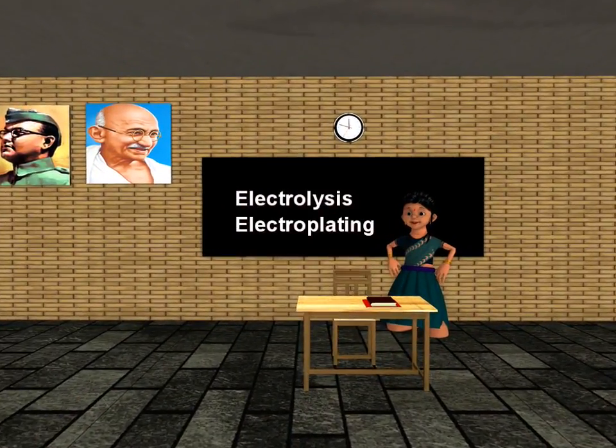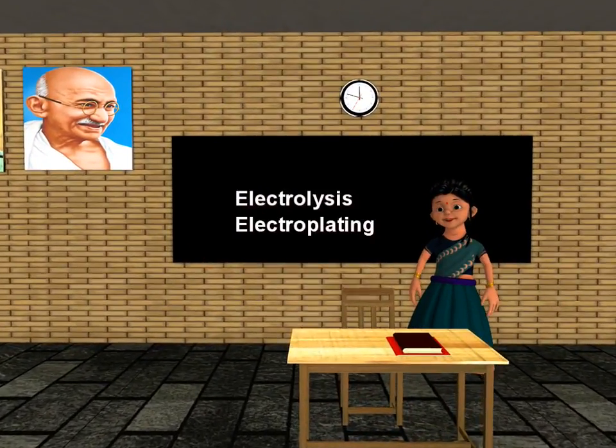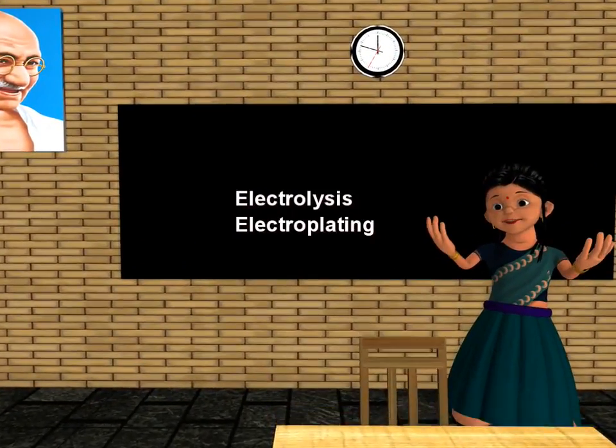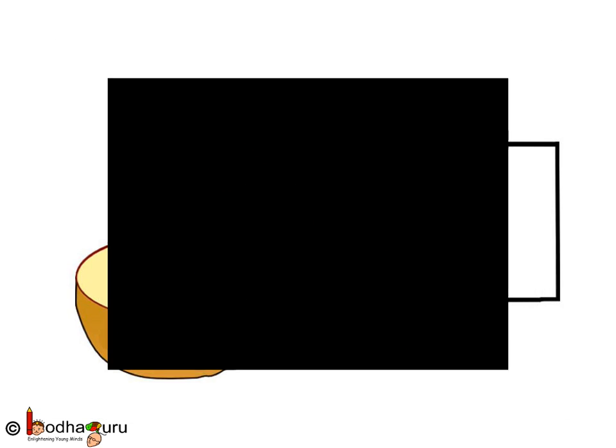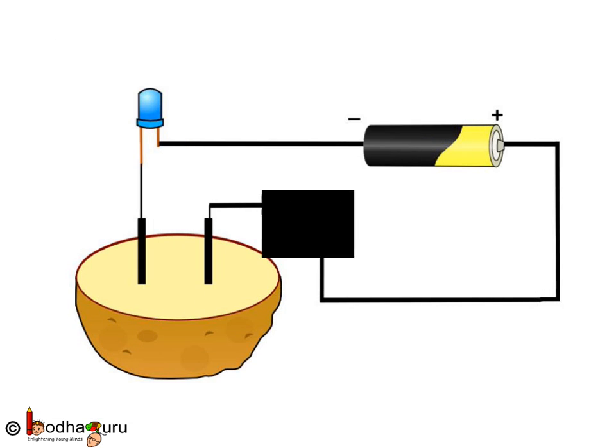Good morning children. Today we shall learn about chemical effects of electric current and electroplating. First, let us do a fun experiment.